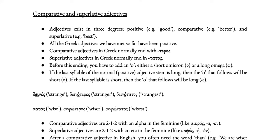In this lesson we're going to look at how to do comparisons. Adjectives exist in three degrees: positive, like the word good; comparative, like the word better; and superlative, like the word best. Other examples would be fast, faster, fastest, or big, bigger, biggest. All the Greek adjectives we've met so far have been in the positive degree.